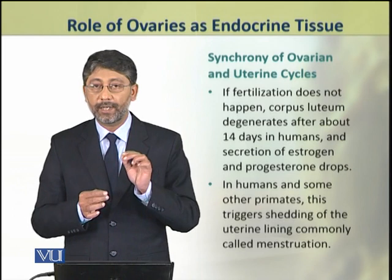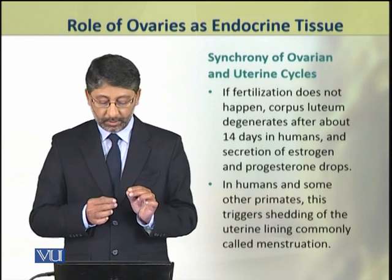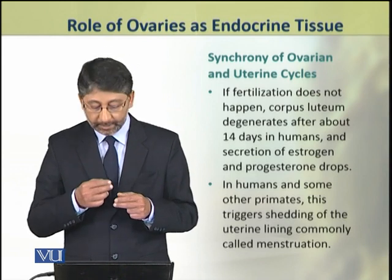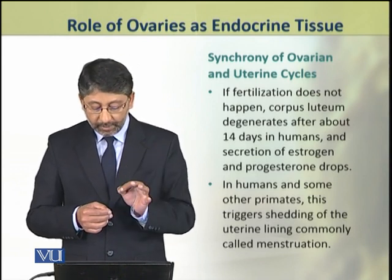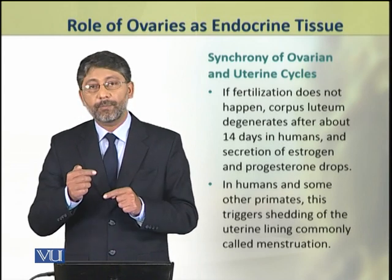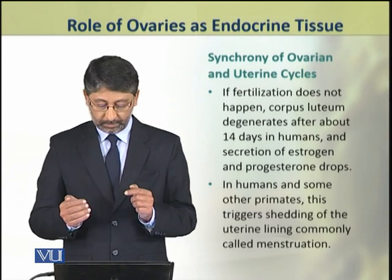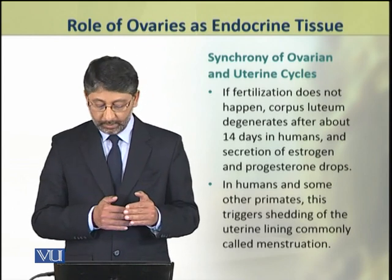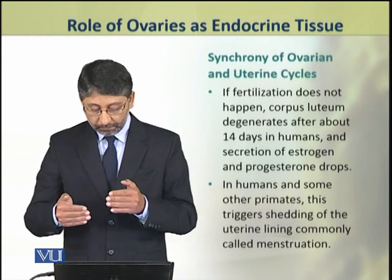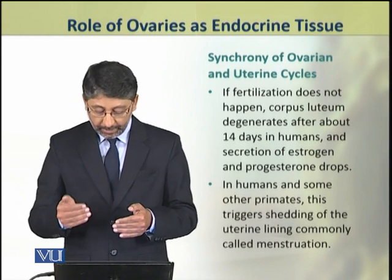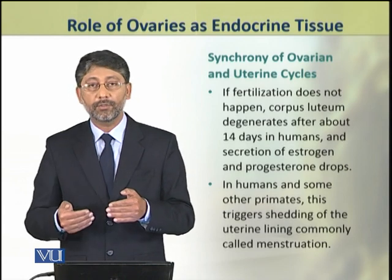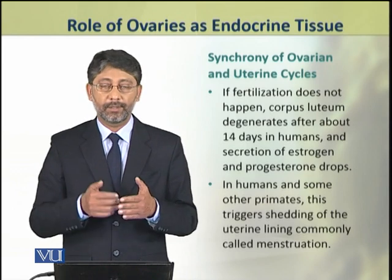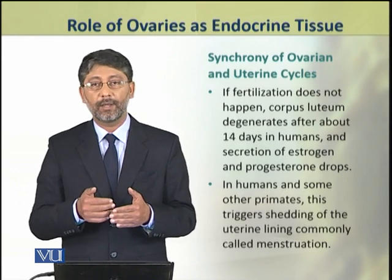However, if fertilization does not occur, the corpus luteum degenerates in about 14 days. As a result, the secretion of estrogen and progesterone drops. In humans and some other primates, when the corpus luteum degenerates, the uterine lining that had developed also breaks down and sheds. This phenomenon is called menstruation.